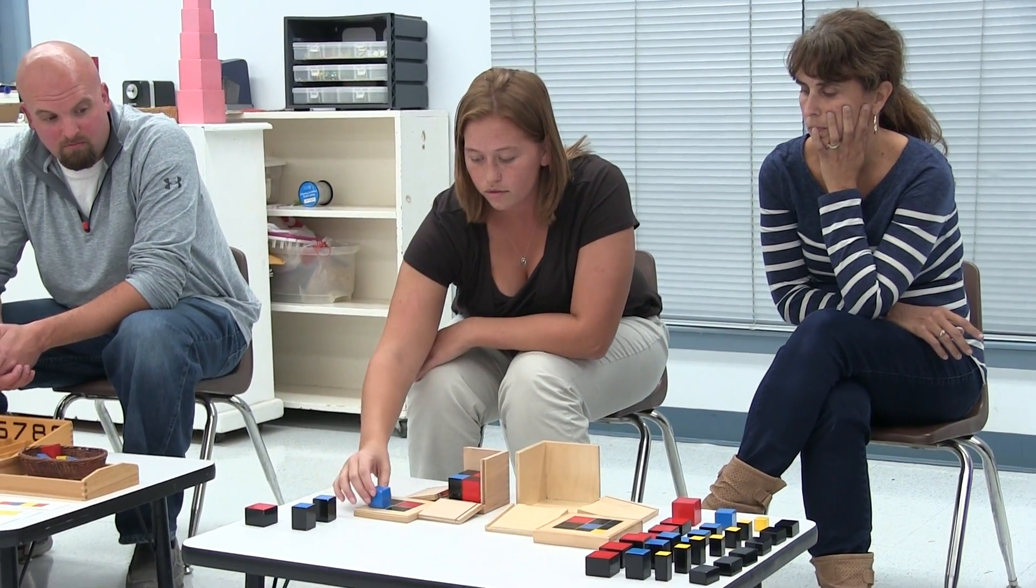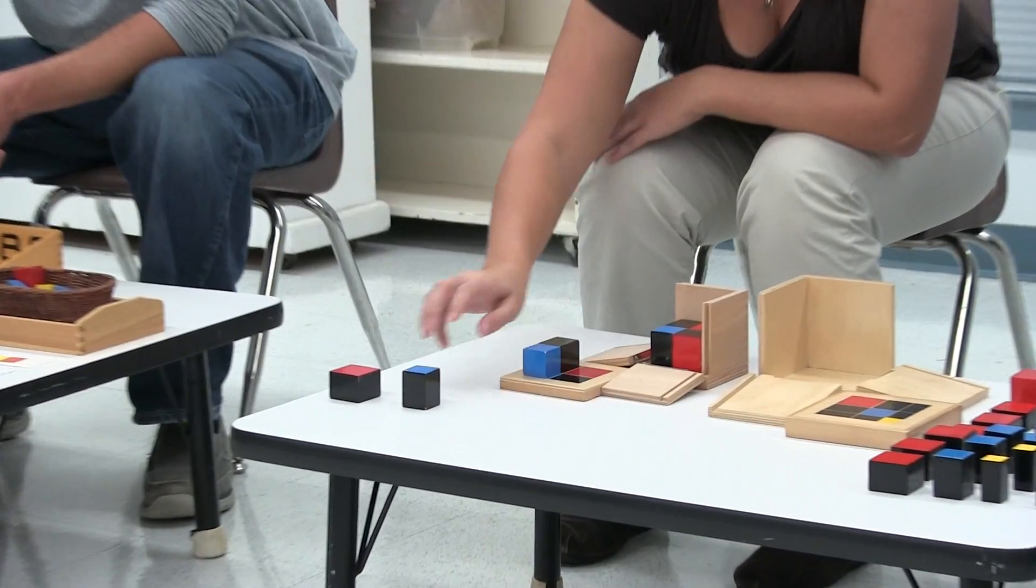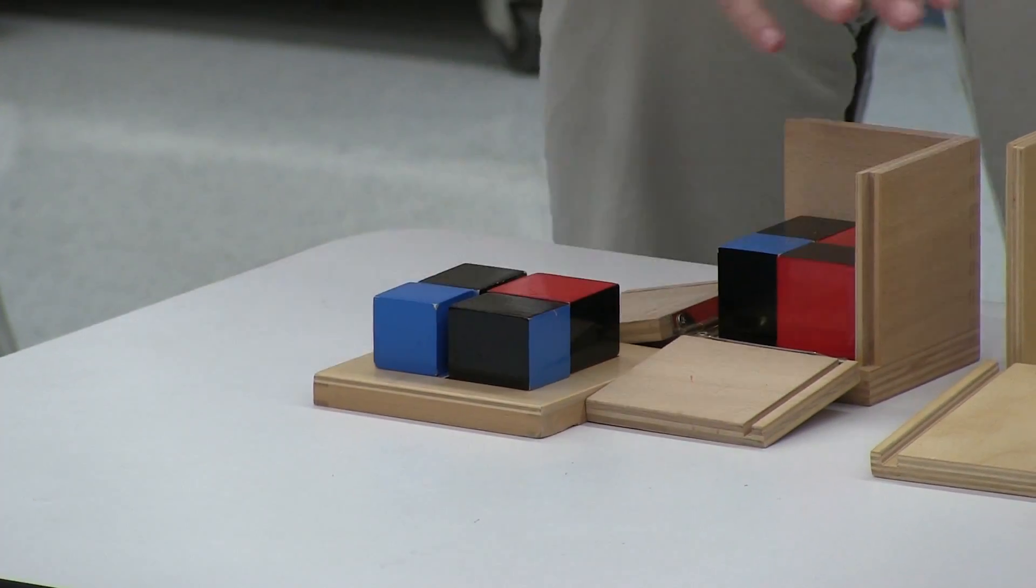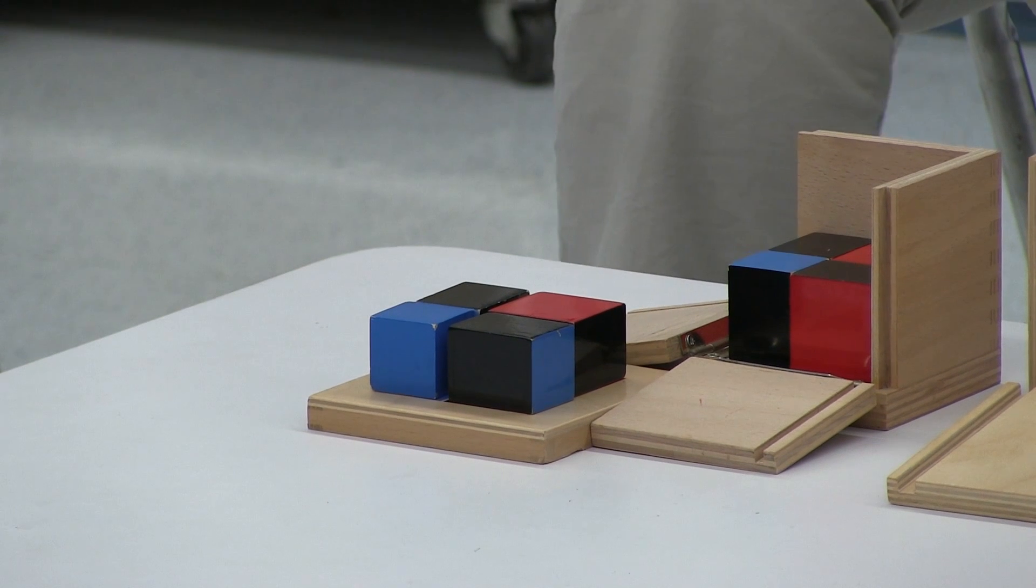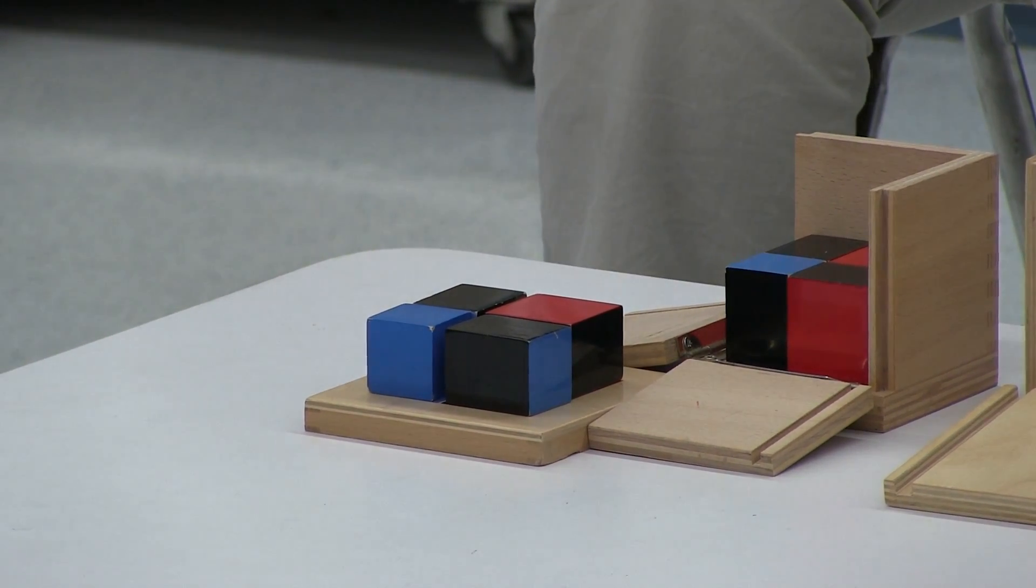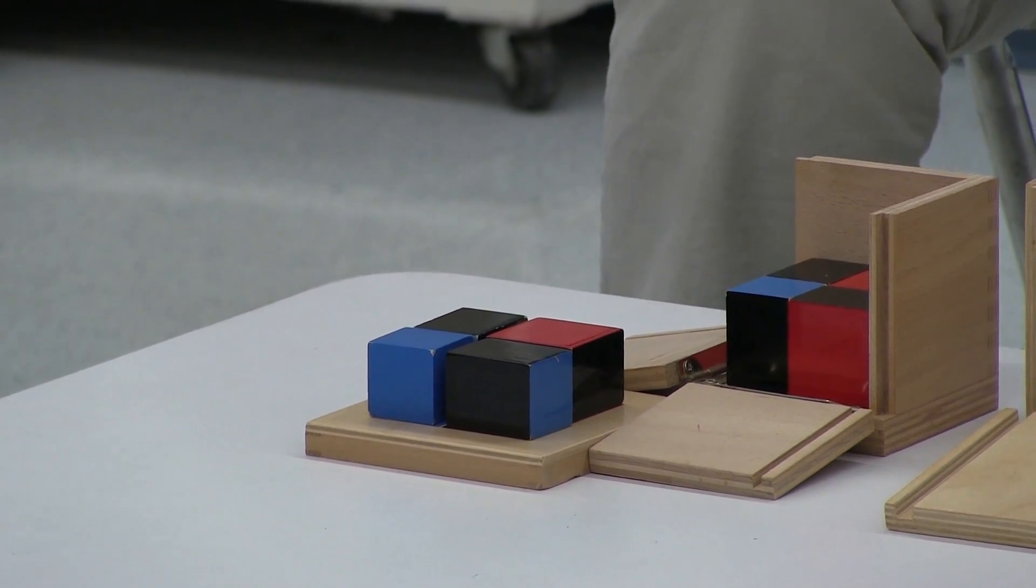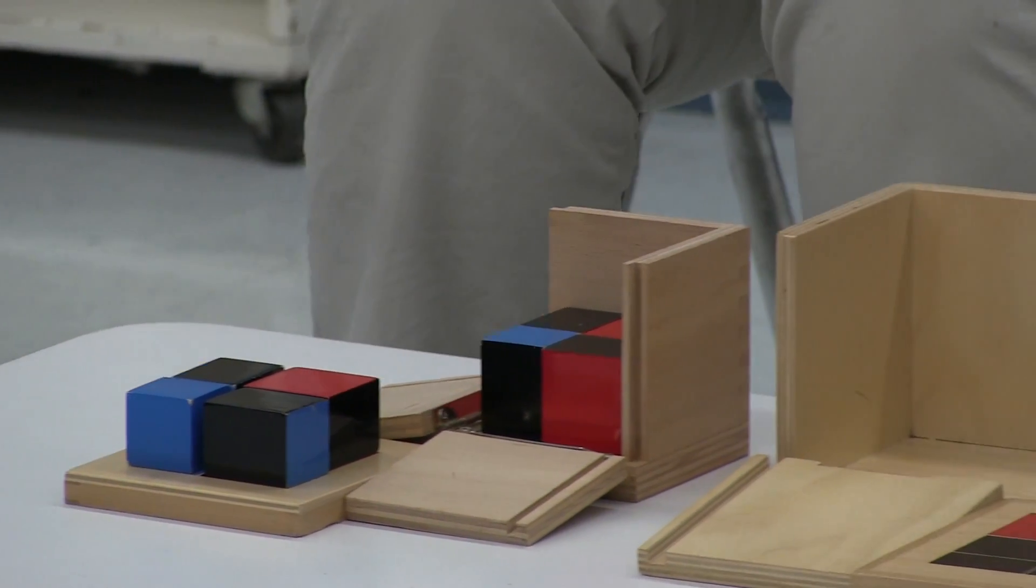The binomial cube is very simple. They just touch the colors, match the shape, and put it back in. And then the trinomial cube, we add an extra layer and a new color. That's so exciting to them—oh, there's yellow. And again, they just build it and put it back into the box.